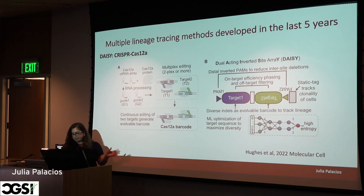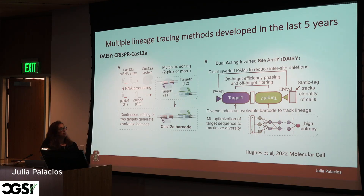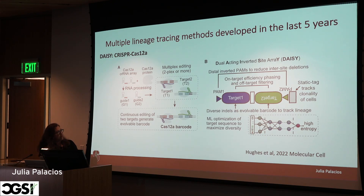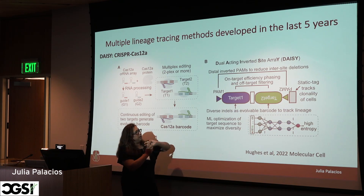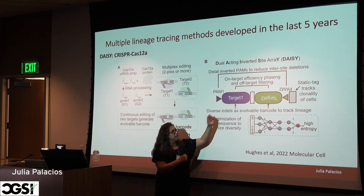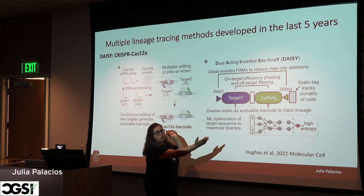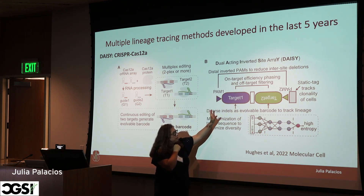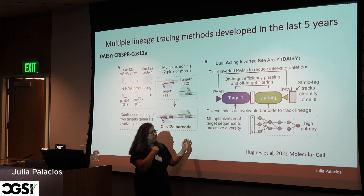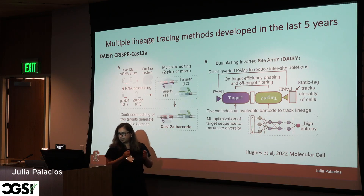Cas12 is another method being developed at Stanford by my collaborators. The idea is to generate a method that has more specific changes. Cas9 goes and affects one target site, but sometimes it may affect more than one by the way CRISPR works and cuts the genome. This Cas12 method is supposed to be more specific and at the same time generate a lot of variation — high entropy.